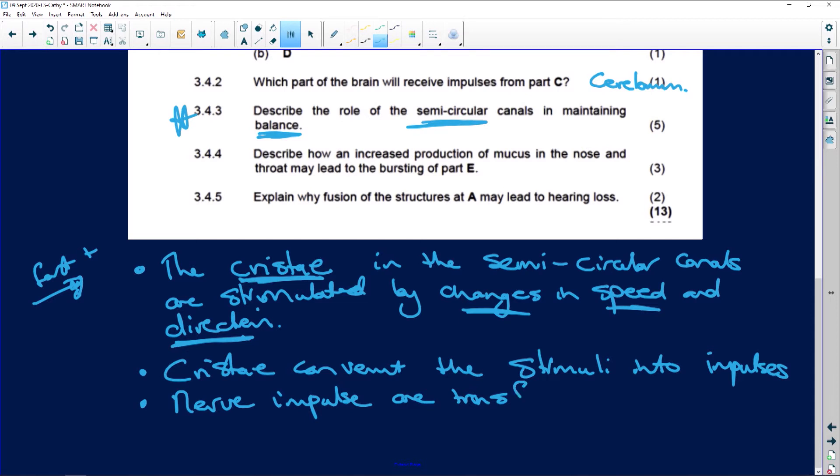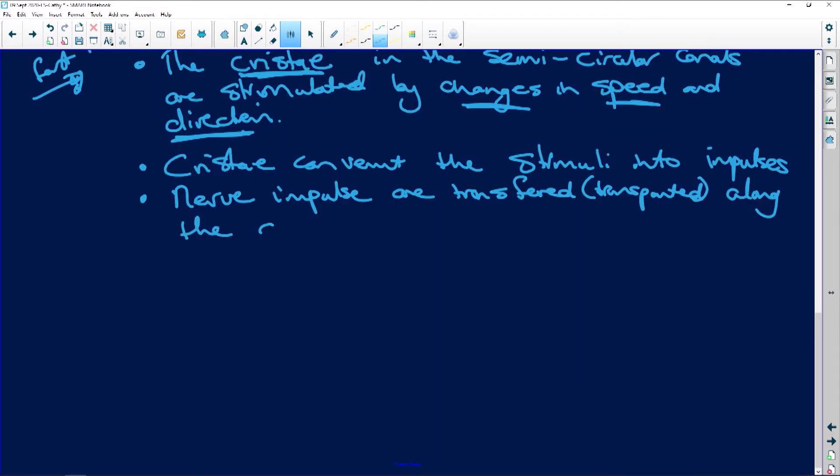Once the impulses are there, nerve impulses are transferred or you can say transported along in the ear. We've got the auditory nerve.